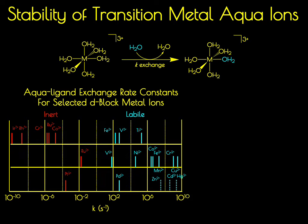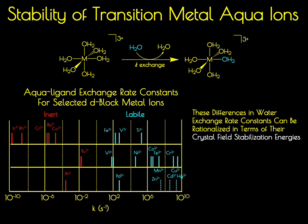Broadly, we can characterize rate constants that are very slow as ones in which you would have a compound that we call inert, meaning that it's relatively stable — we're not going to see any type of ligand exchange. Those which have fast rate constants, we call those metal compounds labile, in which you'll have rapid ligand exchange. As an arbitrary dividing line, we're going to call labile compounds those that have rate constants greater than one, and inert those that have rate constants less than one.